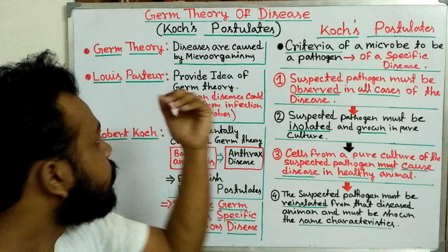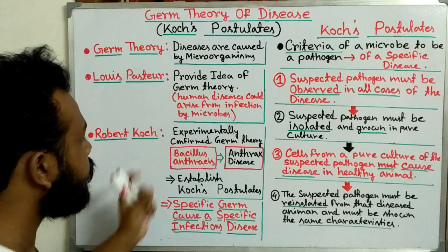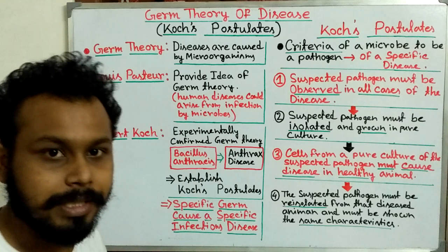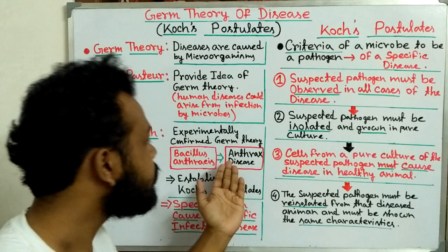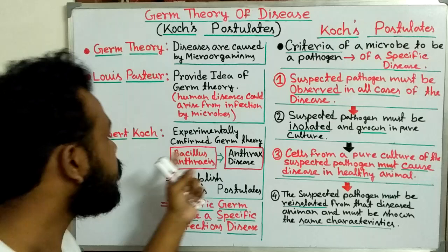However, Pasteur couldn't experimentally prove the germ theory of disease. Then Robert Koch came and he experimentally confirmed that one particular microorganism is responsible for a particular disease — that is the germ theory of disease. He used the Bacillus anthracis microorganism and proved that anthrax disease is caused by Bacillus anthracis in cattle.